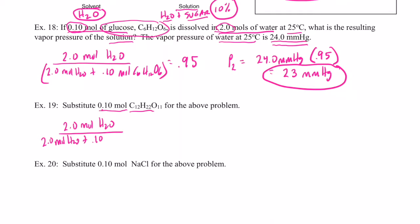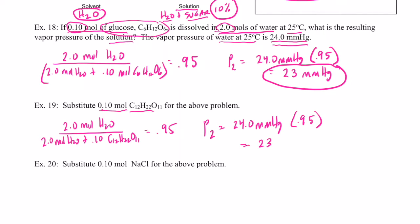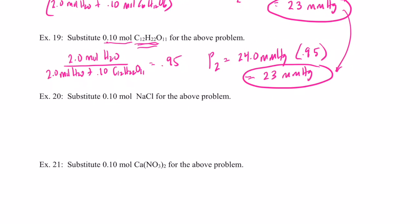Divided by 2.0 moles of water + 0.10 moles of C₁₂H₂₂O₁₁, that still equals 0.95. So P₂ = 24 mmHg × 0.95 = 23 mmHg. It didn't make a difference whether it was glucose or sucrose — it lowered the vapor pressure by the exact same amount.